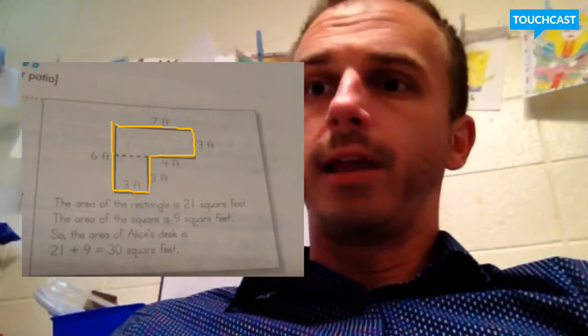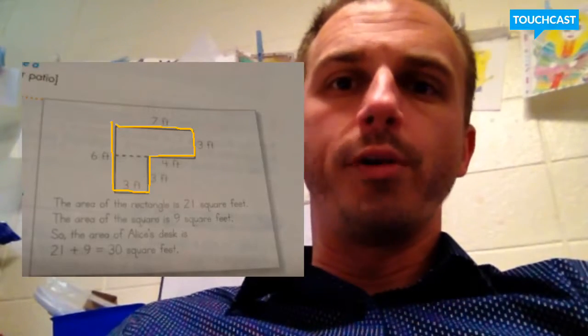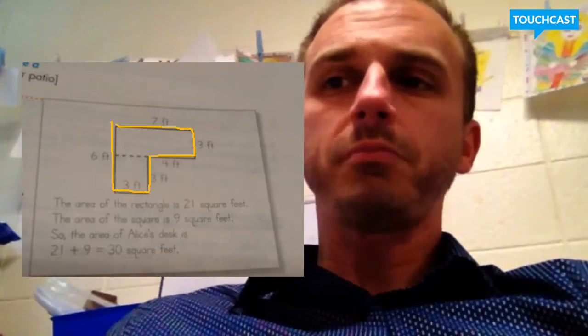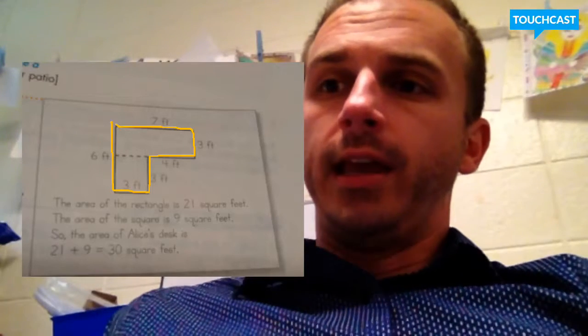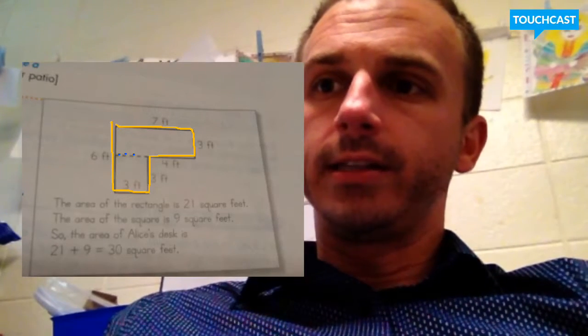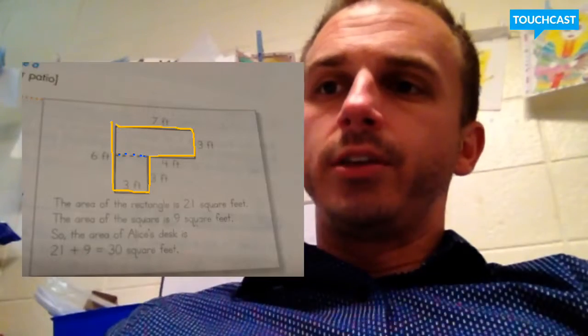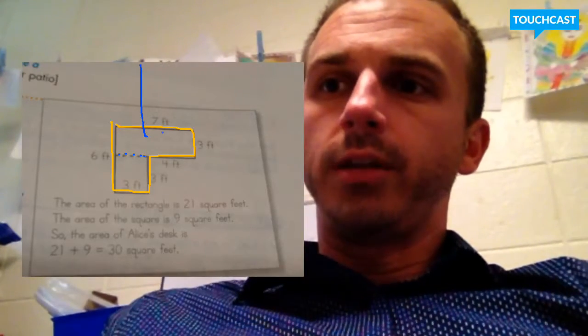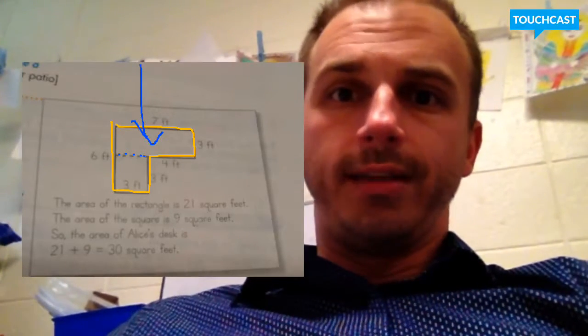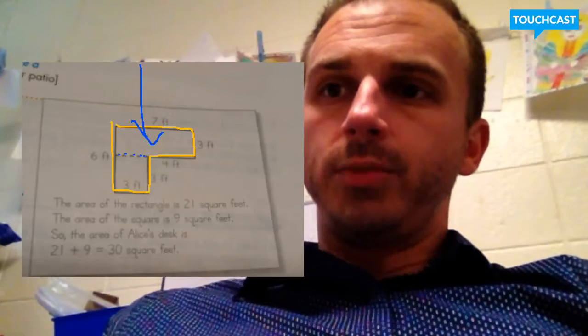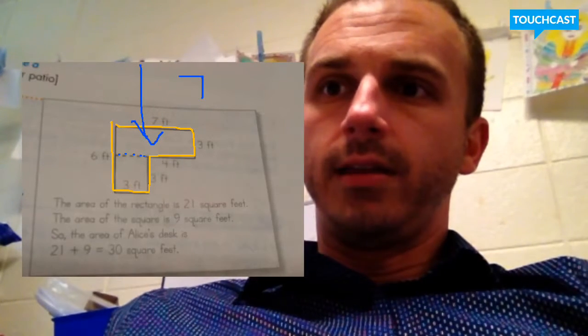So let's look at these two shapes that I have here. Let's look at one together. Let's look at this first one, the top one. And so I'm going to kind of do a little dotted line right here with the blue. And so now you're looking at this shape right here. What shape do you see right here? You see a rectangle. And the measurements are 7 and 3.